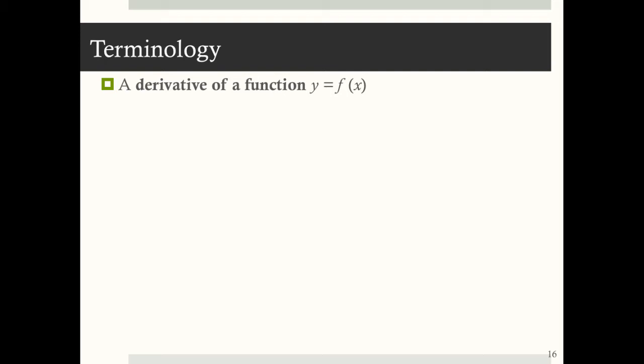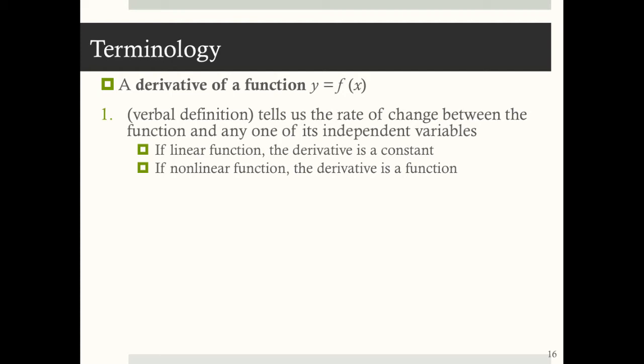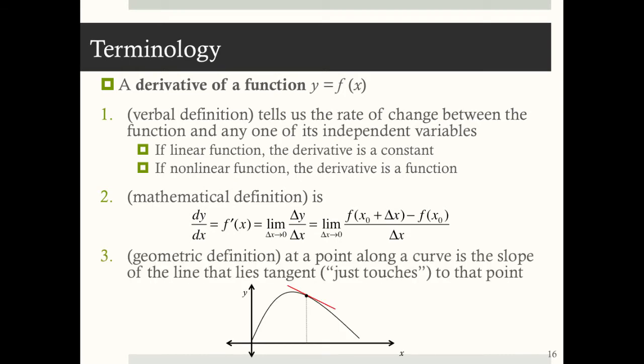So let's talk about three definitions of a derivative. A derivative of a function y equals f of x tells us the rate of change between the function and any of its independent variables. If the function is linear, the derivative is a constant; when the function is nonlinear, the derivative is a function itself. The mathematical definition is the limit of the change in y over the change in x as the change in x approaches 0. The geometric definition: the derivative at a point along a curve is the slope of the tangent line that just touches that point.